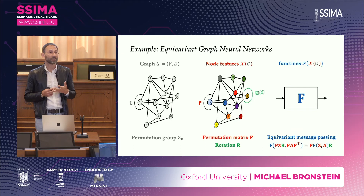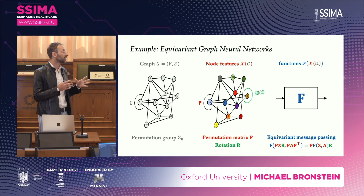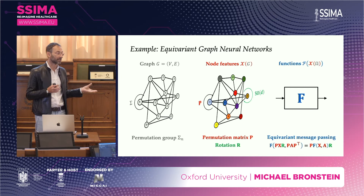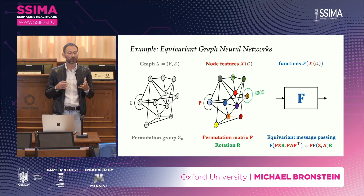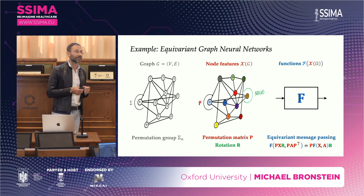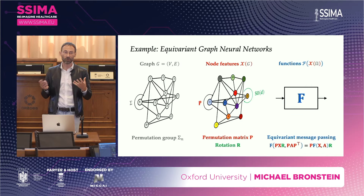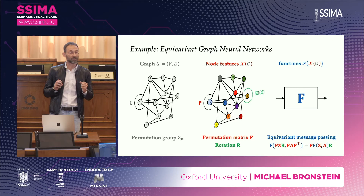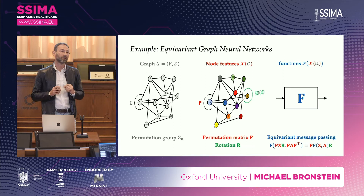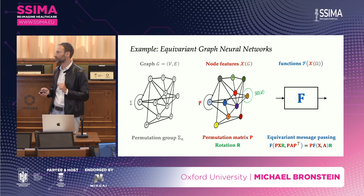Mimicking physical intuition, there is a popular type of graph neural network with equivariant message passing — not only symmetry of the domain but also symmetry of the data. Just as in the standard model we have external symmetries (space-time symmetries) and internal symmetries (gauge symmetries of quantum fields), here we can have symmetry of the graph domain and continuous symmetries of the data such as rotations and translations. This has become very prominent in chemistry, where molecules are modeled as geometric graphs whose nodes have geometric realization.